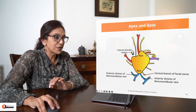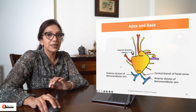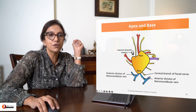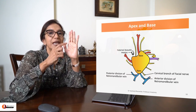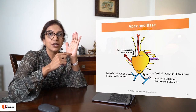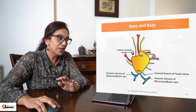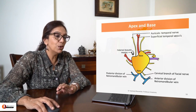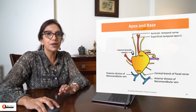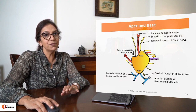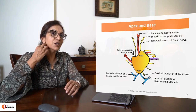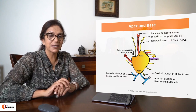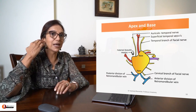Let's now go to the top, which is the base. The base is having three structures emerging from it, known by the mnemonic SAT: S for superficial temporal vessels, A for auriculotemporal nerve, and T for temporal branch of facial. So three structures from the apex and three structures from the base.